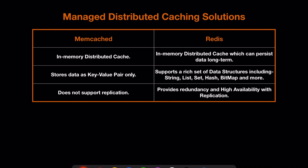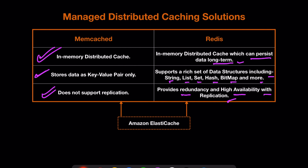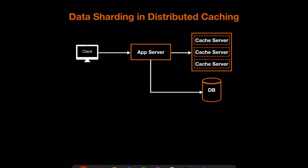Memcached and Redis are two popular managed distributed caching solutions. Memcached is an in-memory distributed cache; Redis is also an in-memory distributed cache but has additional benefits, such as data persistence, so some applications can use Redis as their primary data storage. In Memcached, data is stored as key-value pairs only. Redis supports key-value pairs plus a rich set of data structures including strings, lists, sets, hashes, bitmaps, and more. Memcached does not support replication, whereas Redis provides redundancy and high availability with replication. AWS customers can use Amazon ElastiCache for both.